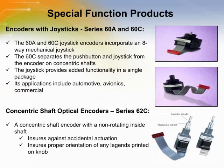The Greyhill 62C is a concentric shaft encoder with a non-rotating inside shaft. This is required when the customer wants the push button feature to be on a different shaft to prevent accidental actuation. The non-turn shaft also ensures that any legends printed on the knobs stay in their proper orientation. Applications include avionics and medical devices.